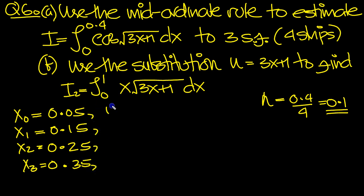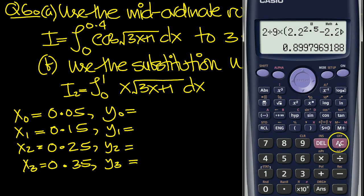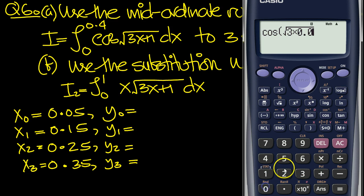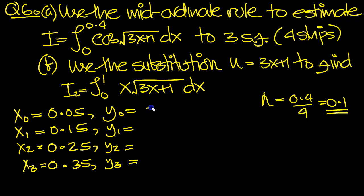So there's our x mid-ordinates then. Now we need the y-values at these mid-ordinate points. Let's just tap them in the calculator and get them. So we've got cos, we're in radians mode, of the root of 3 times x. In the first instance it's 0.05 plus 1. Step outside the square root, close the bracket, 0.47803.